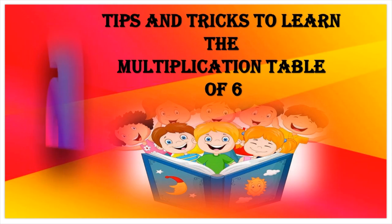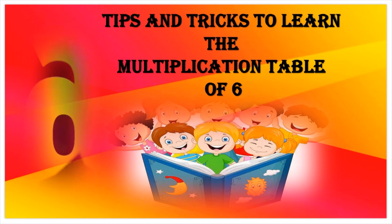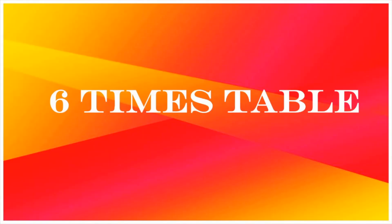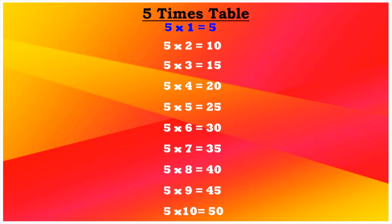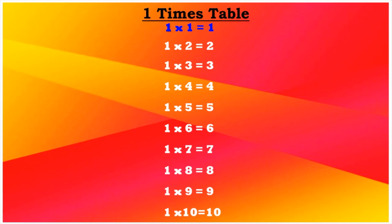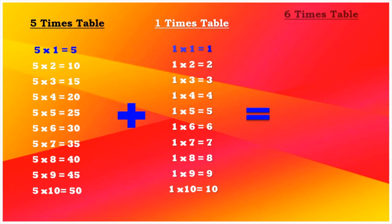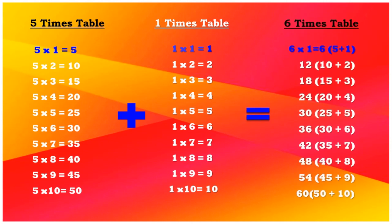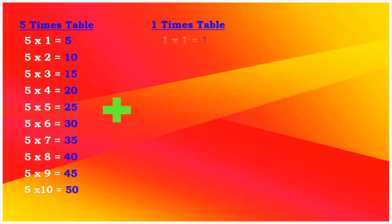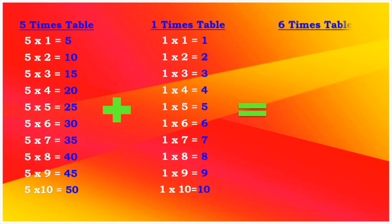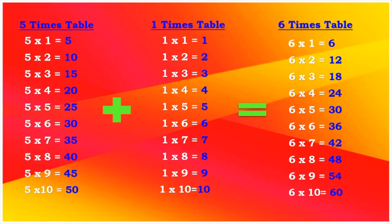In the maths tips and tricks series, I will show you some tricks to easily generate the six times table by using the five and the one times table. We all know that the number six can be generated by adding five plus one. This means the five times table plus the one times table collectively equals the six times table. You can see how each line of the six times table is generated by adding each multiple of the five times table with the respective multiple of the one times table.